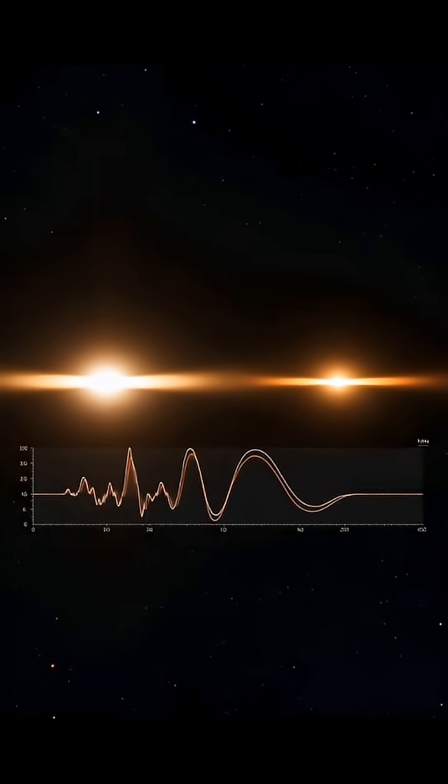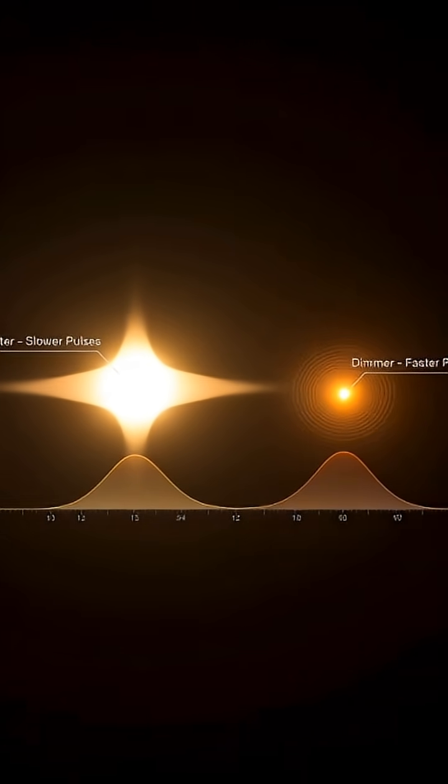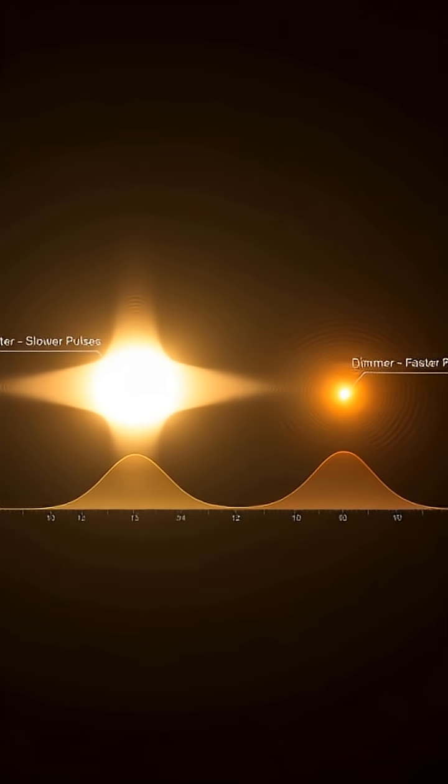Variable stars pulse at rates that match their brightness. Brighter stars equals slower pulses. Dimmer stars equals faster pulses.